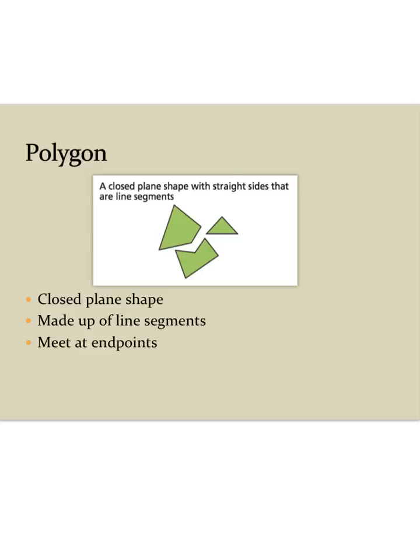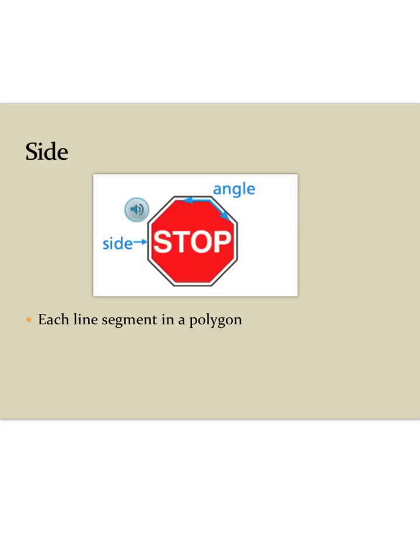A polygon is a closed plane shape, and if we remember, plane shapes are flat, and it is also made up of straight line segments, and they meet at endpoints. A side is each line segment in a polygon.